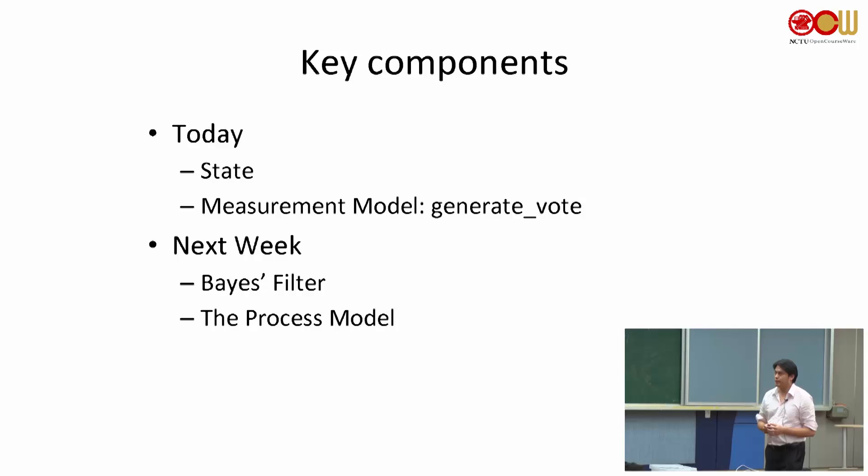And today we will only talk about just half of the lane filter. We will talk about the state and the measurement model. So essentially, when you get the line segments from your camera, how are we going to generate the votes for the lateral distance and the angle of the car. And next week, we will talk about the histogram filter and the process model.